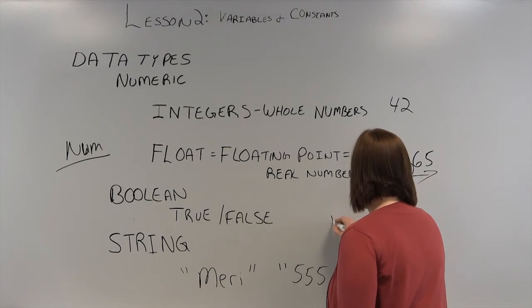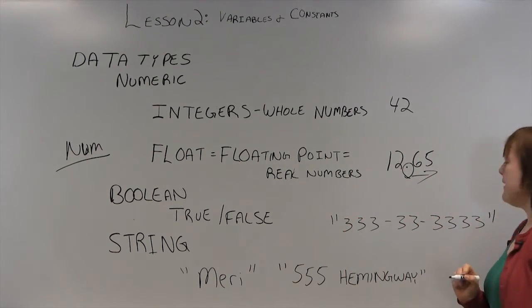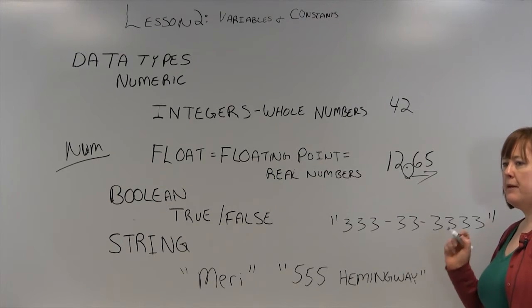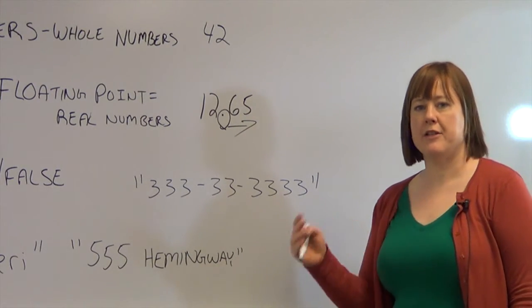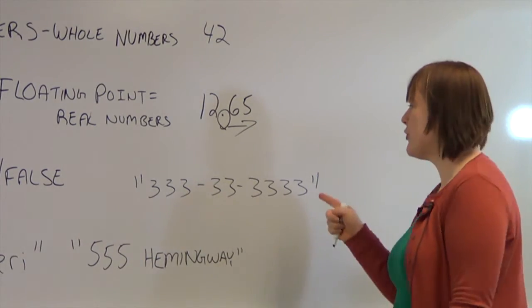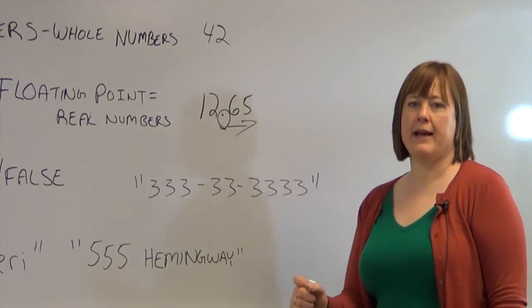And something that you should be aware of, if you're working with a social security number, you might have a question of, should the social security number be a float or a string? Unless you're going to do some sort of math, addition, subtraction, multiplication, you should treat numbers as strings. You're never going to add a phone number. You're never going to add a zip code.